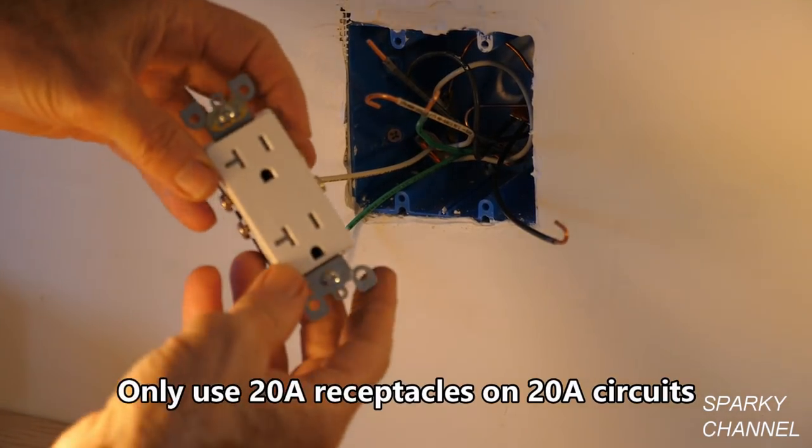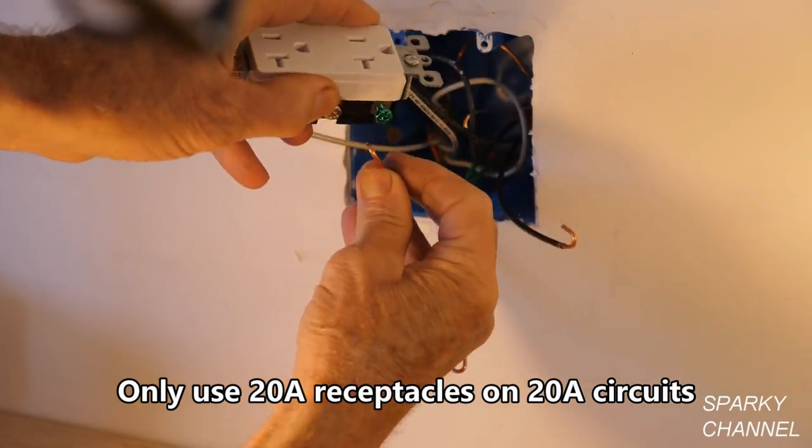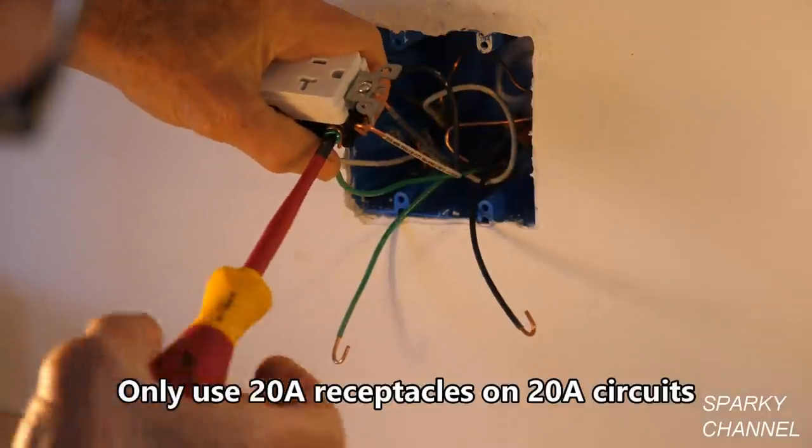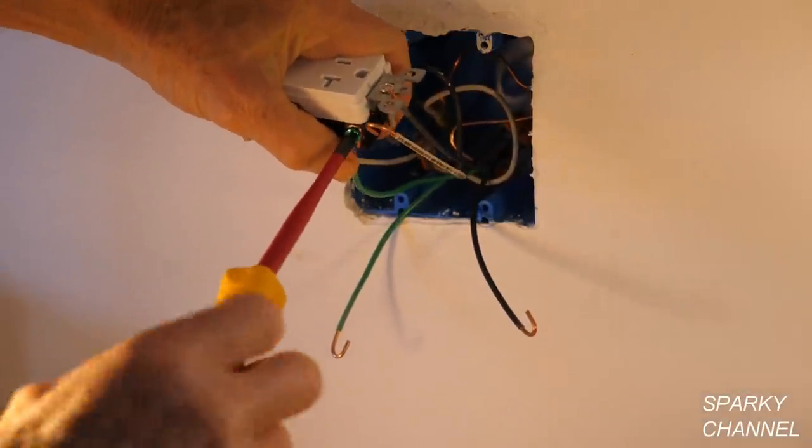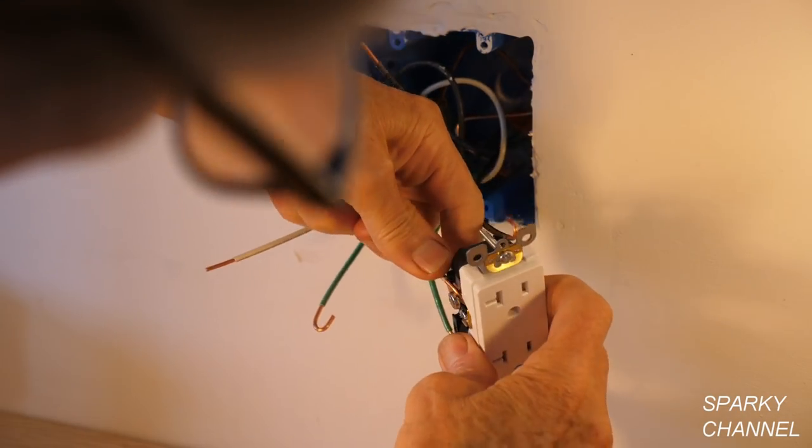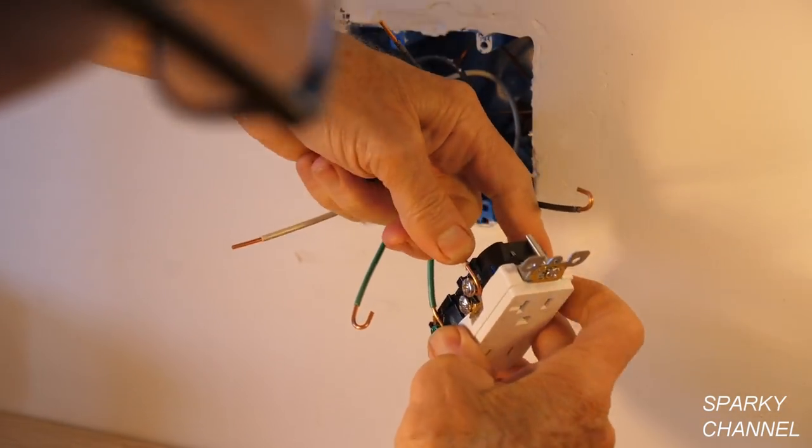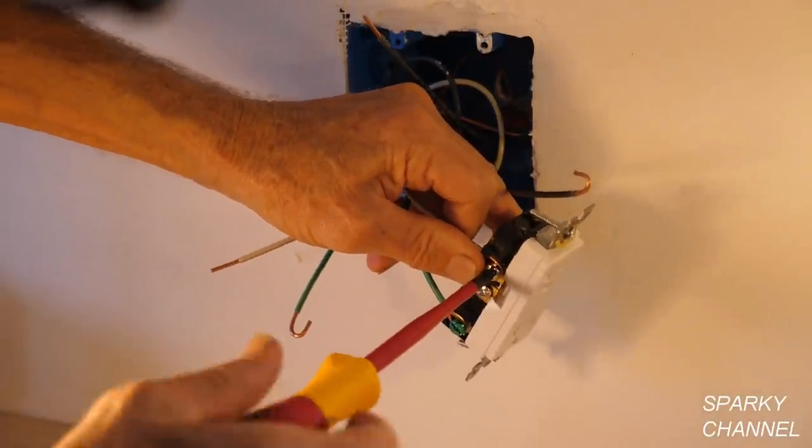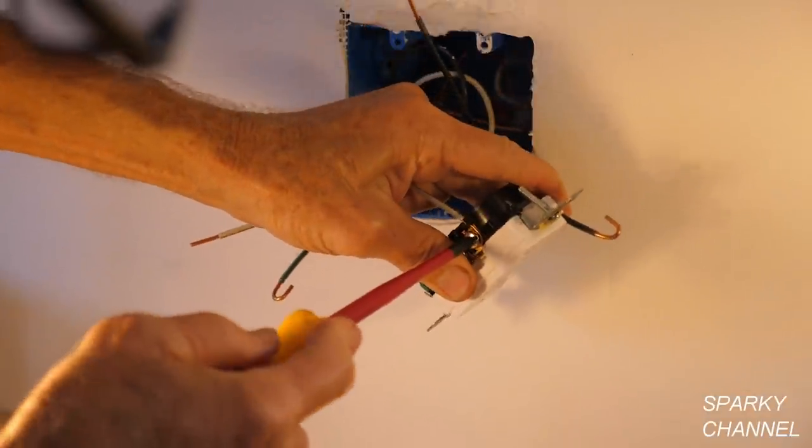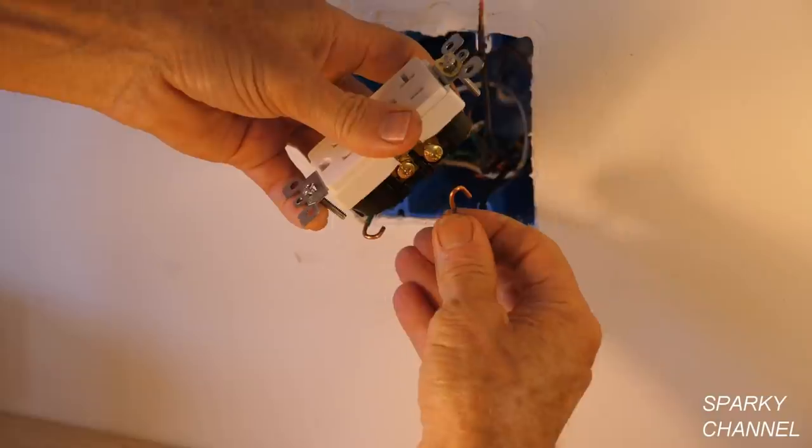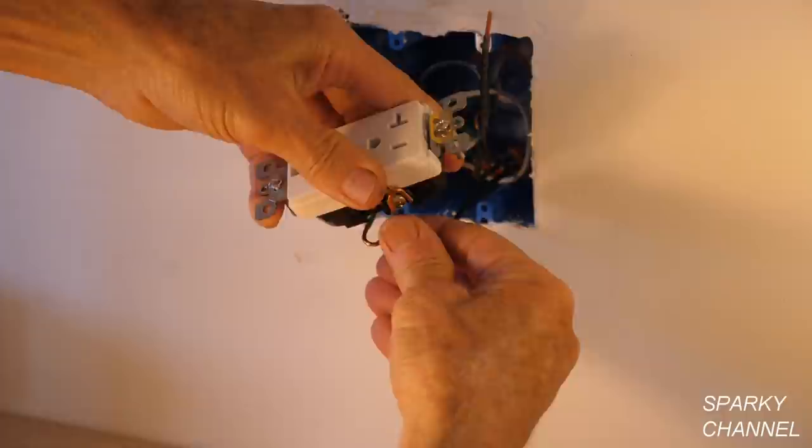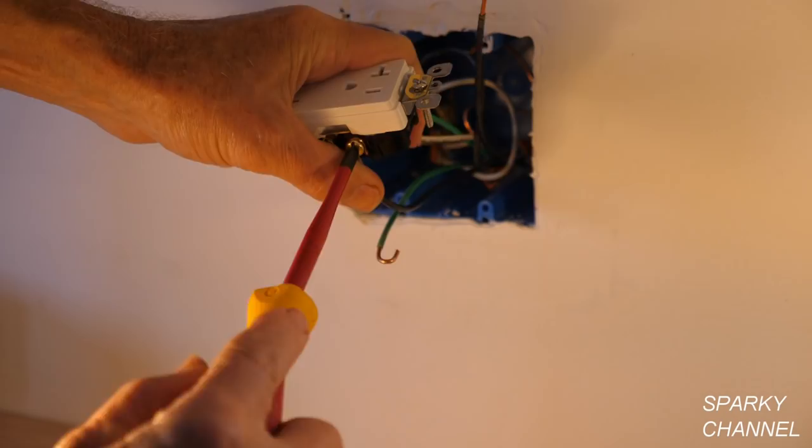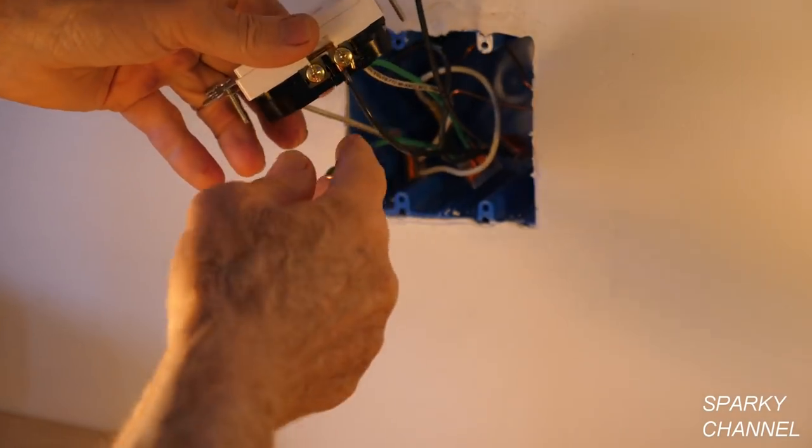So let's get started wiring this receptacle. I'm going to take the ground and I'm going to put it around the green terminal and tighten it down securely. So now I'm going to take the neutral and I'm going to go around the silver terminal. I'll crimp the wire and tighten it down securely. Take the black wire, put it around the terminal, crimp it, and secure it well.